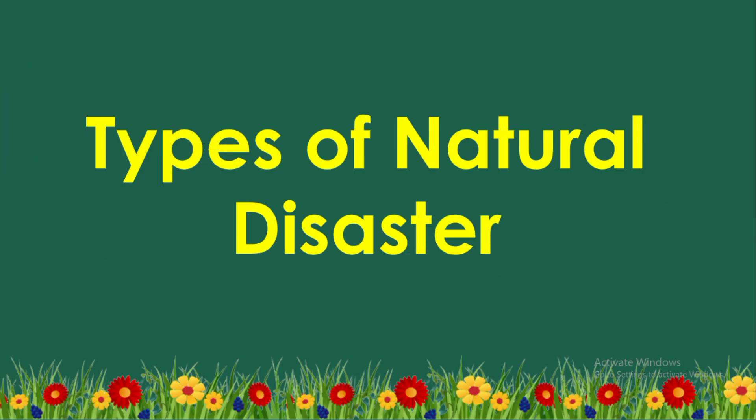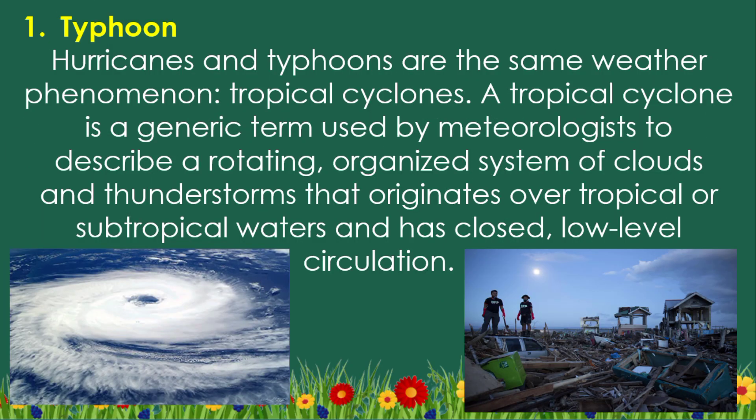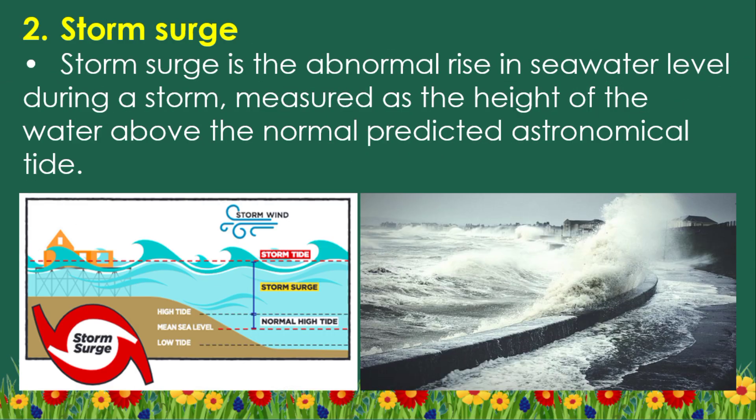Type 1: Typhoon. Hurricanes and typhoons are the same weather phenomenon — tropical cyclones. A tropical cyclone is a generic term used by meteorologists to describe a rotating, organized system of clouds and thunderstorms that originates over tropical or subtropical waters and has closed low-level circulation.